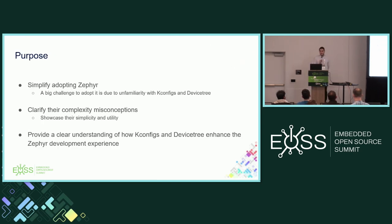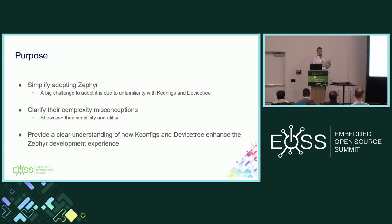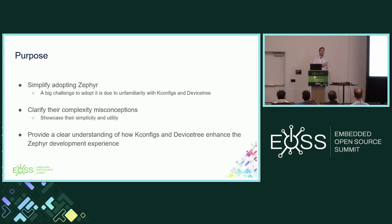The purpose of this talk is to simplify adopting Zephyr, because there is a big challenge in adoption due to unfamiliarity with kconfig and device tree. For some, it's something new — especially if coming from bare metal development or traditional real-time operating systems. Even on Linux, if you develop user space applications, this would be slightly different. The purpose is to clarify complexity misconceptions, showcase that they are very simple and useful, and provide a clear understanding of how they enhance the Zephyr development experience.